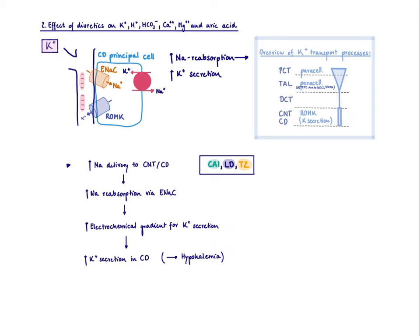We're going to first talk about potassium. To understand how diuretics influence potassium levels we need to understand where potassium is reabsorbed. Most electrolytes, including potassium, are absorbed predominantly in the proximal convoluted tubule via a paracellular process, not via transporters. The same is true in the thick ascending limb, also paracellularly. Then in the connecting tubule or collecting duct we have some potassium secretion happening, and although this is just a small amount it is highly regulated and depends on how much sodium is delivered to the collecting duct.